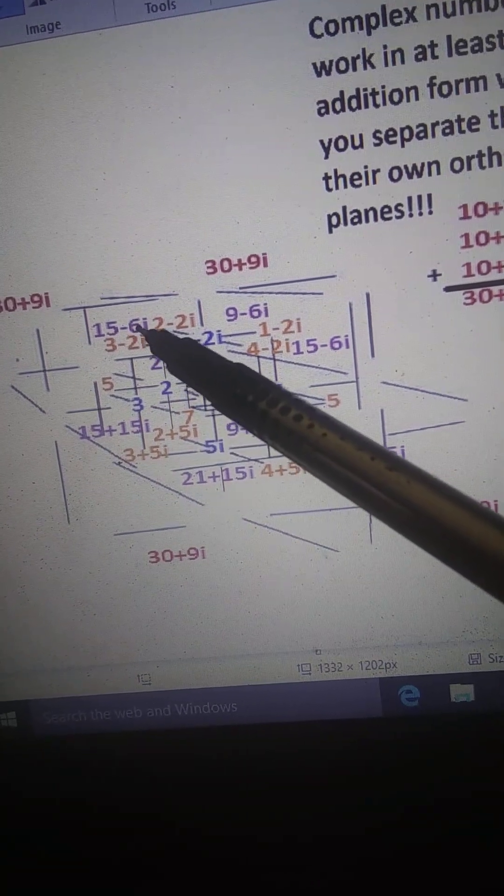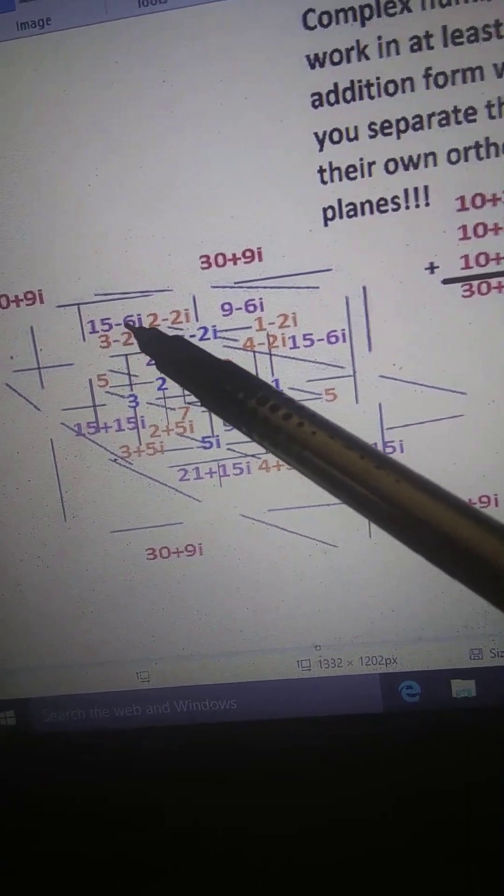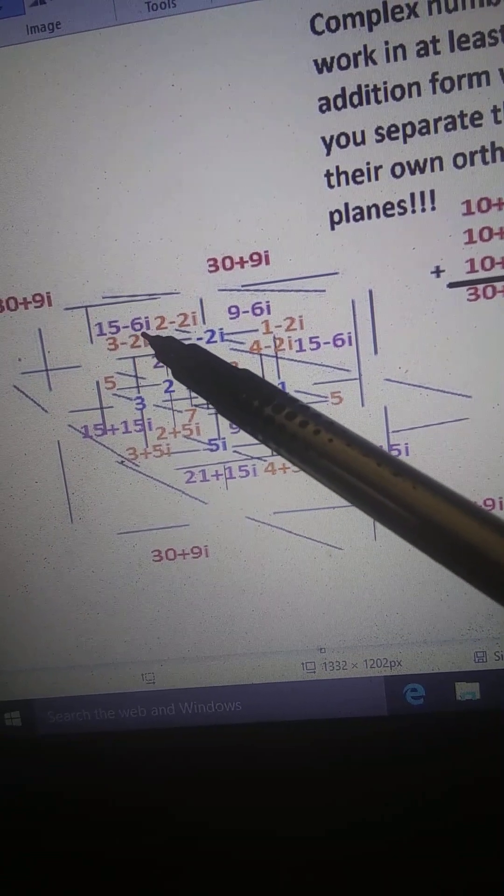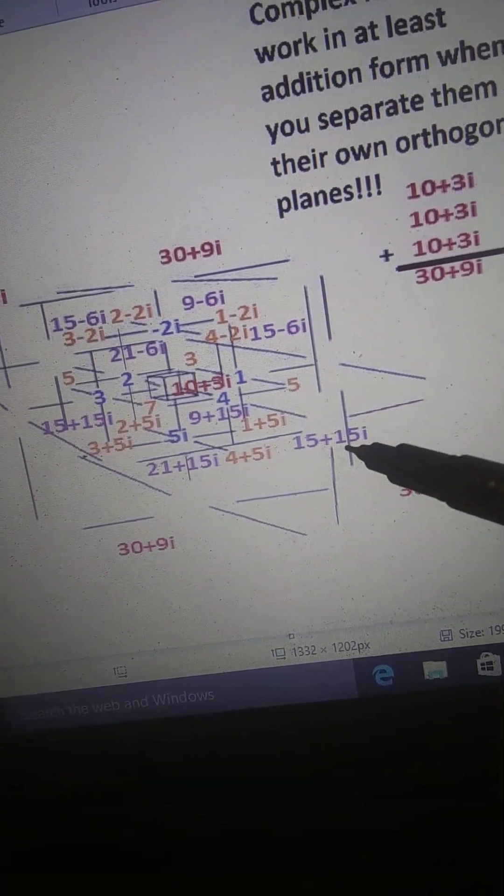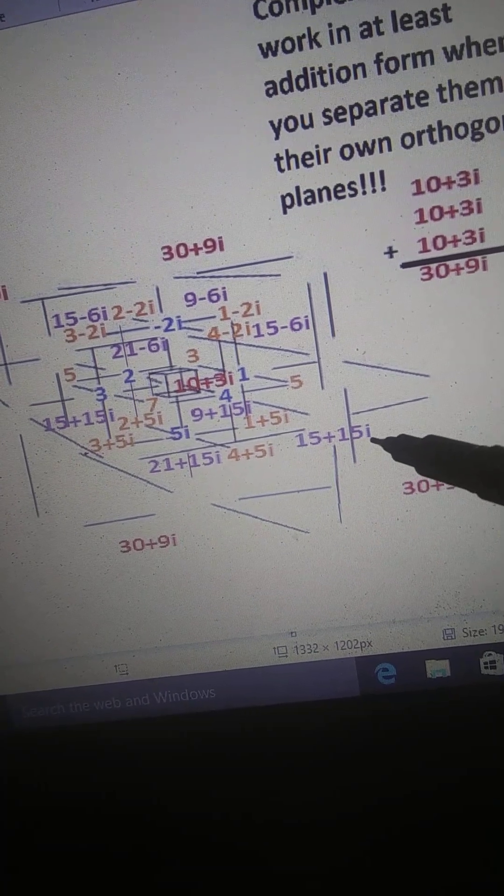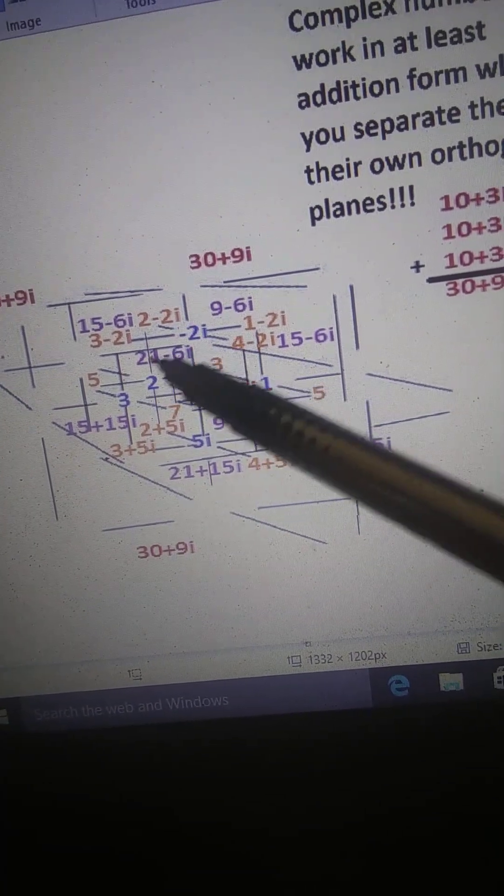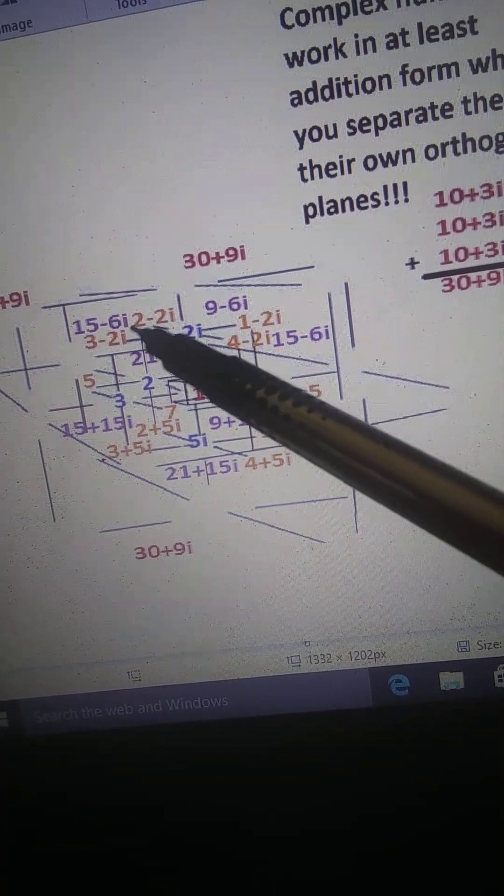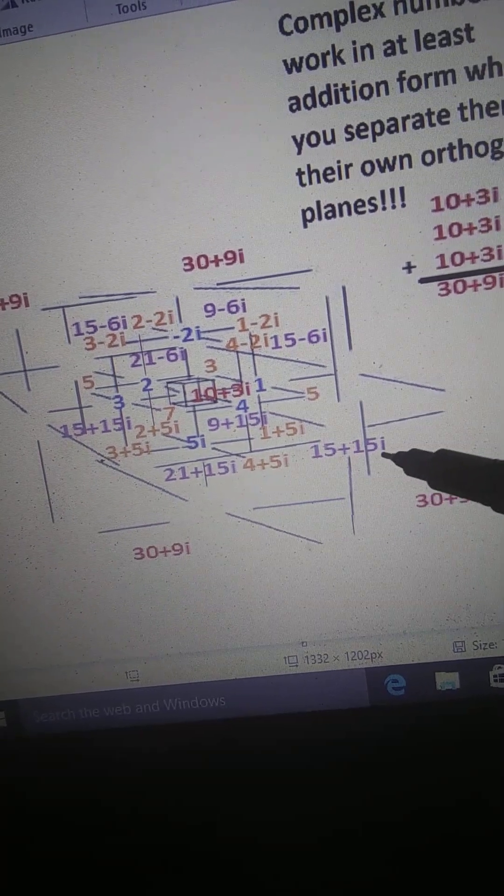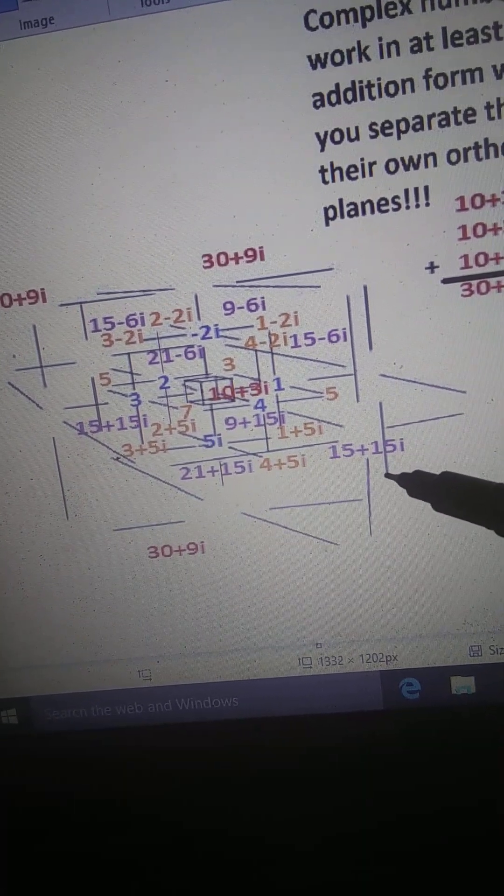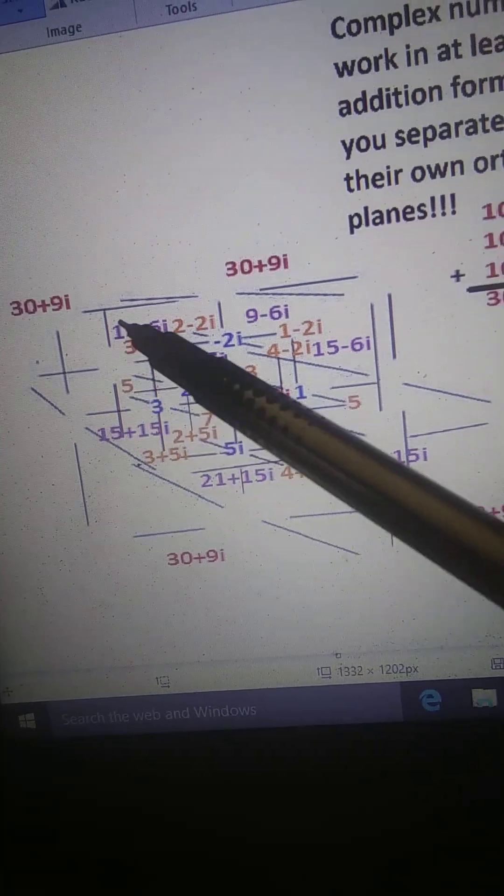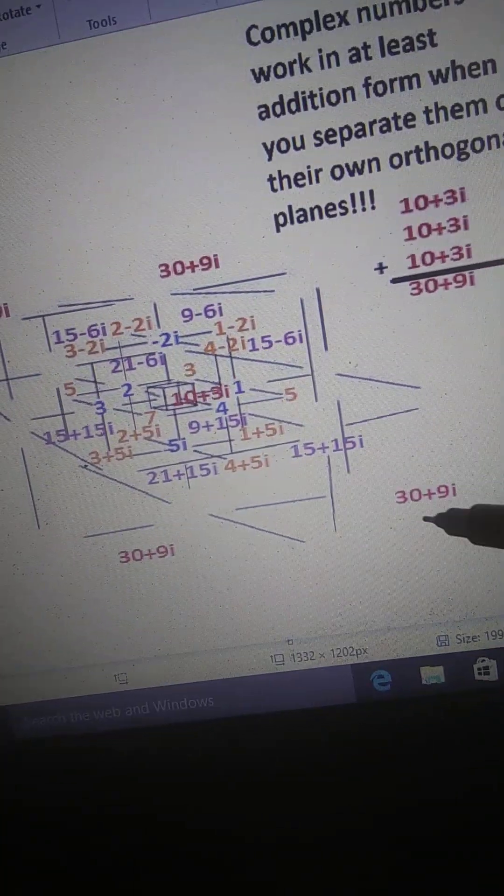Now this over here is fifteen negative six i. Over here is positive fifteen i. So negative six and positive fifteen is positive nine, which is right on both sides.